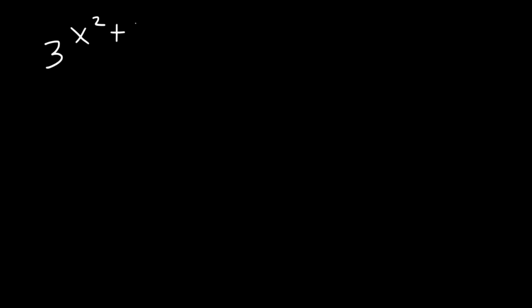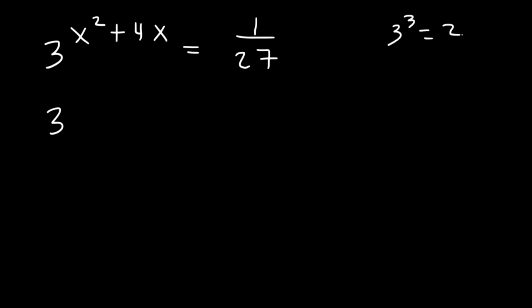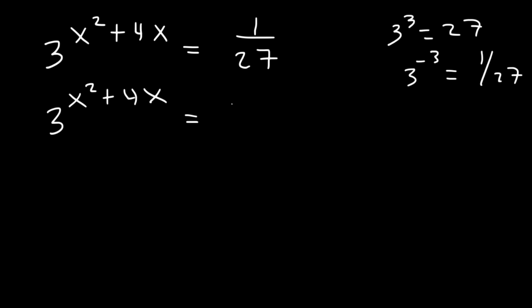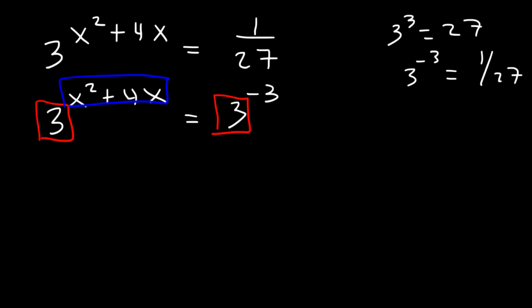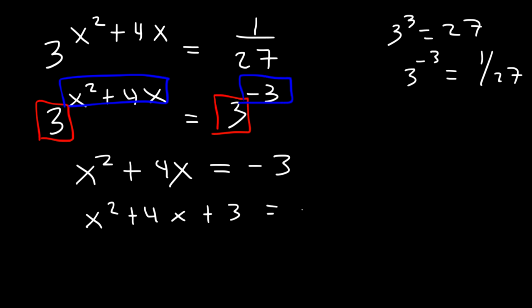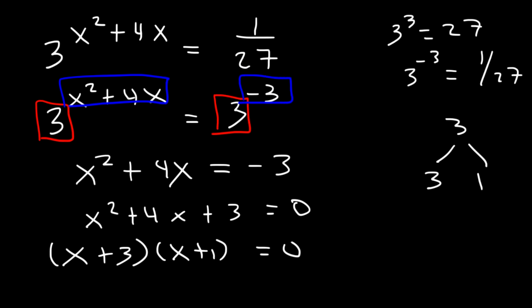How would you solve this: 3 raised to the x squared plus 4x equals 1 over 27? Since 3 to the 3rd is 27, we know 3 to the negative 3 is 1 over 27. Making the bases the same, we set x squared plus 4x equal to negative 3. Moving negative 3 to the left gives x squared plus 4x plus 3 equals 0. Factoring: x plus 3 times x plus 1, so x equals negative 3 or x equals negative 1.